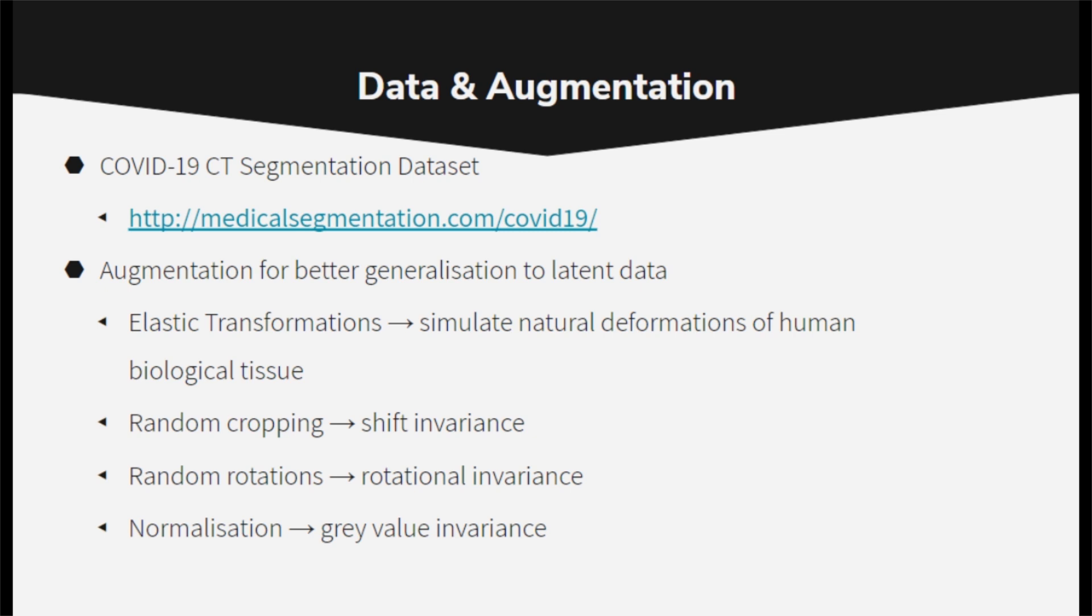To compensate for the limited dataset size, I did elastic transformations to simulate the natural deformations of human biological tissue, random cropping for shift invariance, random rotations for rotation invariance, and normalization for gray value invariance.